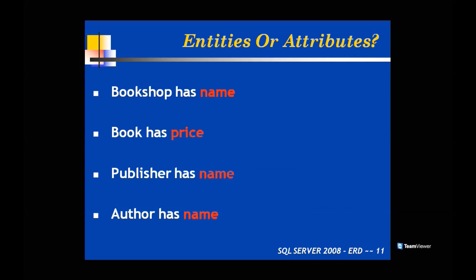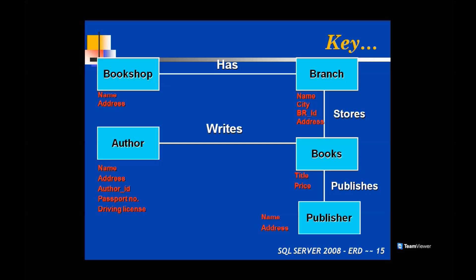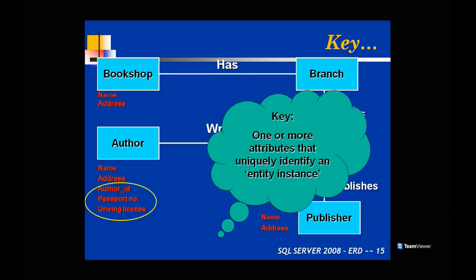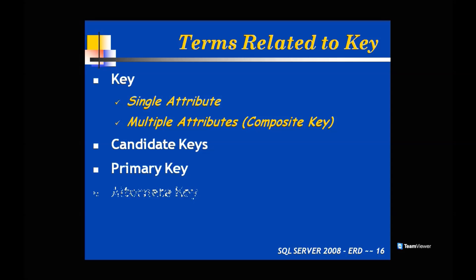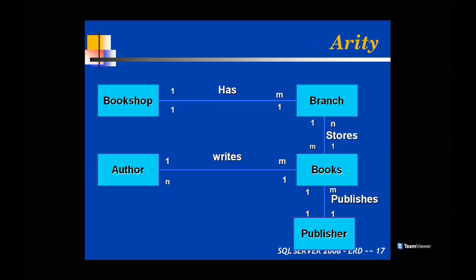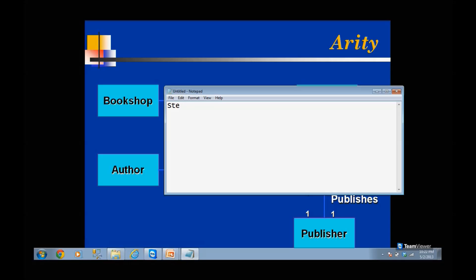We understood what is a key, what is a candidate key, what is a composite key, what is the primary key, and what is an alternate key. Single attribute keys, multiple attribute keys, standard keys, primary keys, alternate keys — all of them we discussed. Now I'm going to explain foreign keys. Before understanding foreign keys, let us understand what is an ERP — that is step number five.